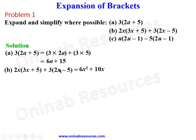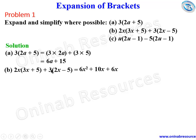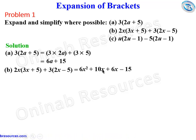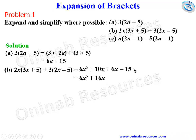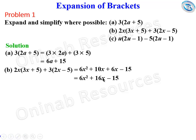We then go to the second bracket. There is 3 outside, so we use plus 3 to multiply everything inside. Plus 3 times 2x gives plus 6x, and plus 3 times minus 5 gives minus 15. We simplify the middle terms: 10x plus 6x gives 16x, so the result is 6x squared plus 16x minus 15. Note that 6x squared and 16x are not like terms because their powers of x differ.